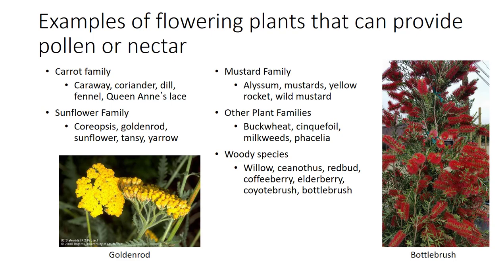There are many flowering plants that provide pollen or nectar. Many plants in the carrot, sunflower, and mustard family produce nectar for pollinators and natural enemies. Many woody species, such as redbud, elderberry, and bottle brush, are also good sources of nectar and pollen for natural enemies. In conclusion, this video covered the different tactics you can use for implementing biological control. Biological control is a useful tool for developing an integrated pest management program.